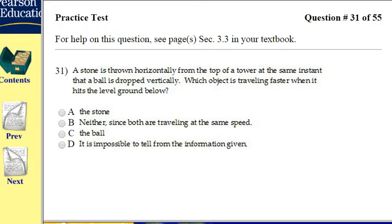All right, so look at this one. Problem number 31. Up here, pay attention guys. Problem number 31 says that a stone is thrown horizontally from the top of a tower.